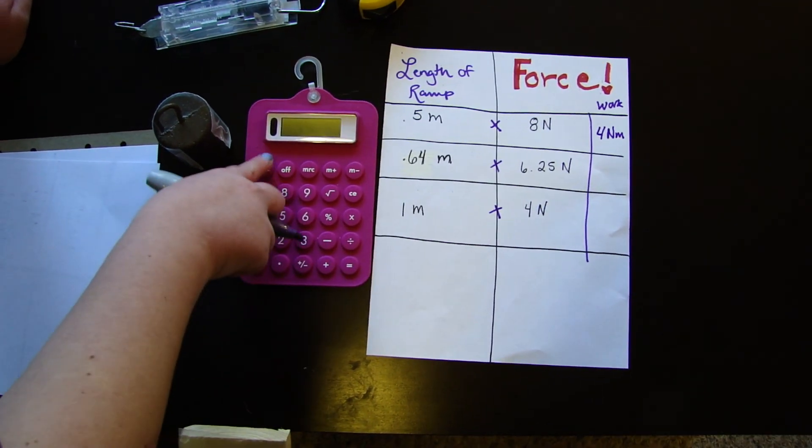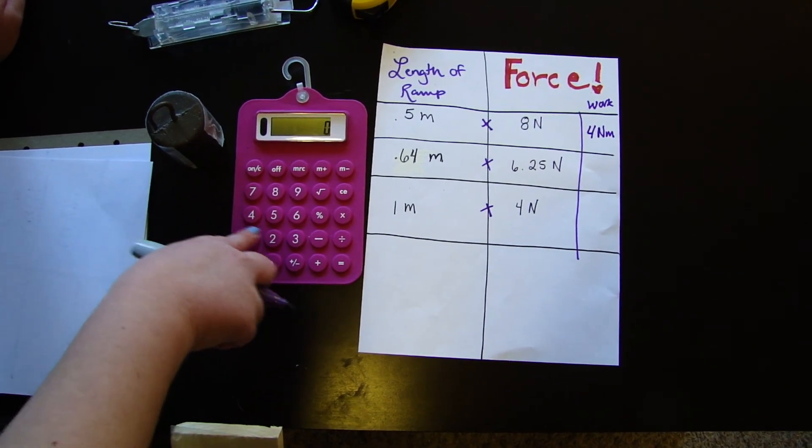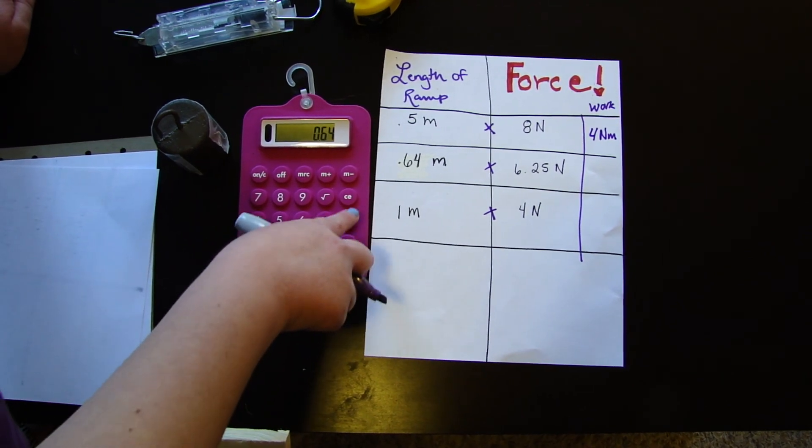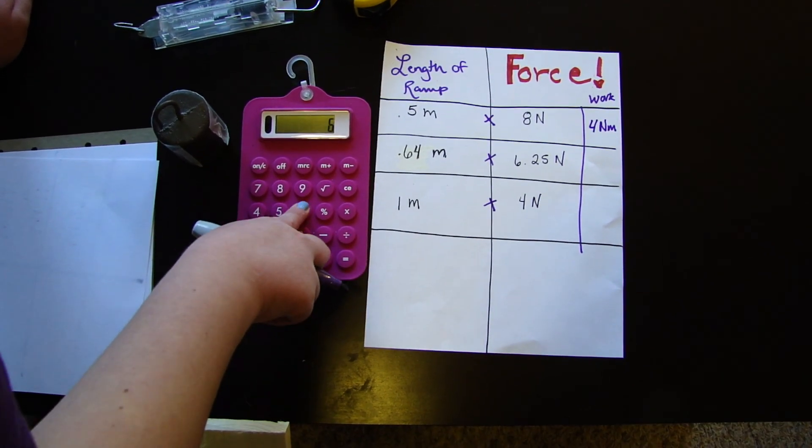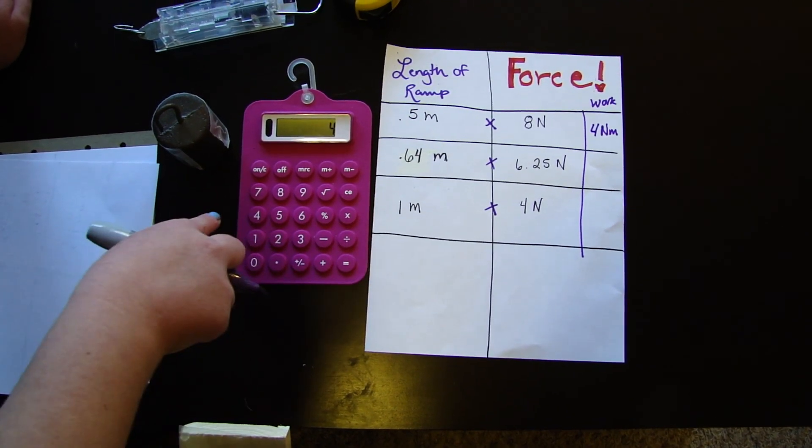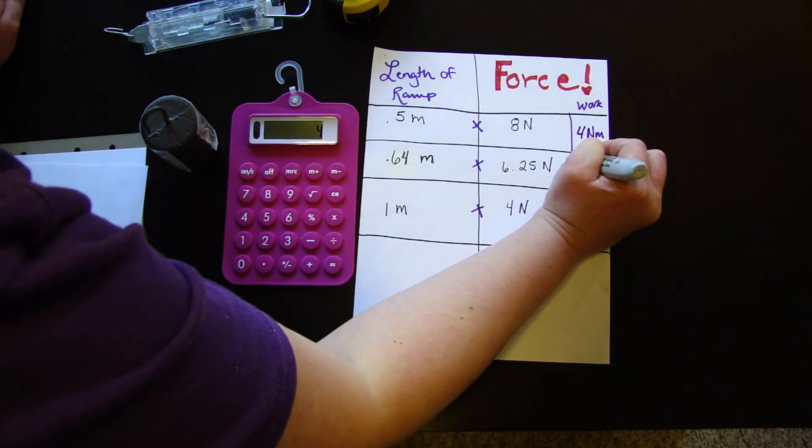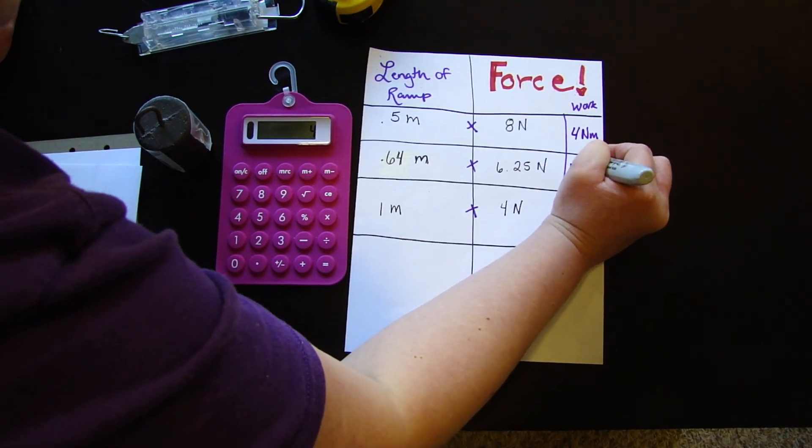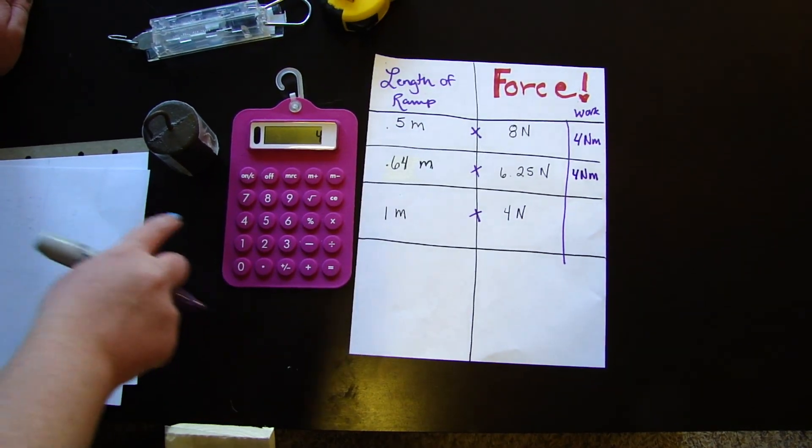Next, I'm going to take 0.64 meters times 6.25 newtons. That also equals 4 newton meters.